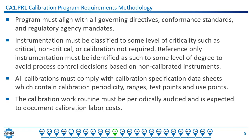The purpose of calibration program requirements is to ensure the necessities for setting up a calibration program are known and adhered to. The program must align with all governing directives, conformance standards, and regulatory agency mandates. These can vary by location and industry, but are typically easy enough to identify and apply within a well-constructed program. All instruments that need to be calibrated must be identified, and instrumentation must be classified to some level of criticality, such as critical, non-critical, or calibration not required. This aids in correctly classifying discrepancies or deviations as critical or not.